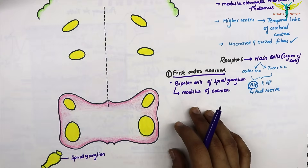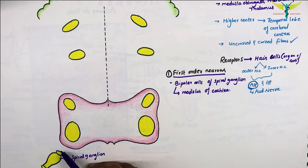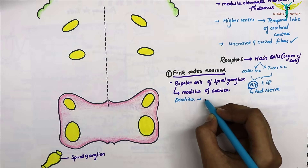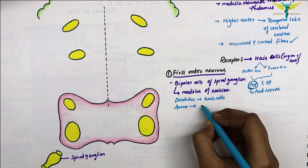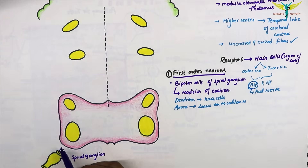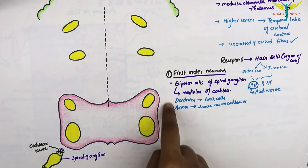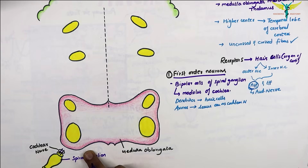Their long processes, which are the axons, leave the ear as the cochlear nerve and enter the medulla oblongata. So the dendrites of these bipolar cells are situated at the hair cells, and the axons leave the ear as the cochlear nerve. This cochlear nerve enters the medulla oblongata.